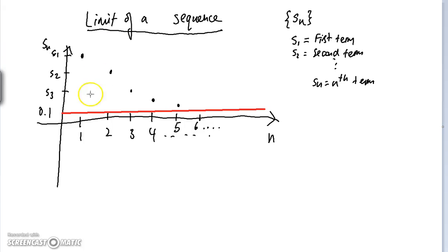So suppose I create a strip over here, a strip over here, and the strip I create is of a width of 0.04 units. Well, if the sequence truly converges to 0.1, it means that after a certain number of terms, so perhaps after the sixth term, I notice that all the terms of my sequence actually lie within this strip, which means that the distance between